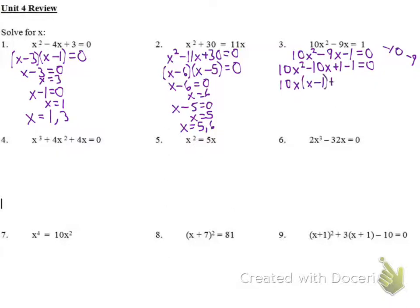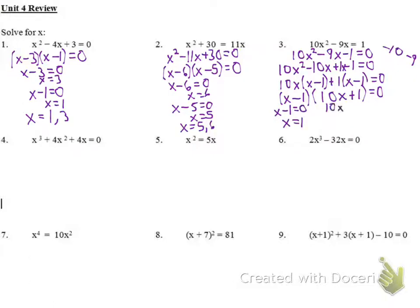I can take a 10x out of the first two terms, leaving me with x minus 1. Take out a 1 from the last two, also leaving x minus 1. So I take out the x minus 1 common term, and 10x plus 1 is what's left, equals 0. Setting each equal to 0: if x minus 1 equals 0, x is 1. If 10x plus 1 equals 0, x equals negative 1 tenth. So my solution is 1 and negative 1 tenth.